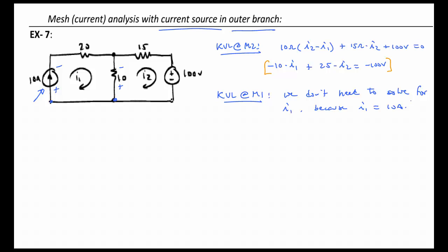The current source is on the perimeter of the circuit, so all of I1 flows through the 10 amp current source. This results in I1 being defined. Therefore, take equation one and replace I1 with 10 amps.